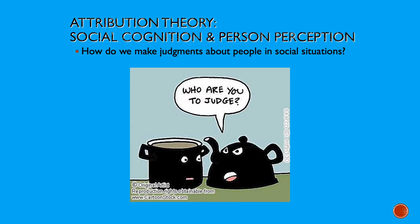Welcome to this PowerPoint presentation on attribution theory. Prior to the 1960s, social psychologists were interested in attitudes, attitude change, and group dynamics, including conformity and group decision making. But starting in the 1960s and really picking up steam in the 1970s, the hot topic in social psychology came to be known as social cognition. Social psychologists became interested in what people are thinking when making social judgments, and the primary theory developed to explain these things came to be known as attribution theory.